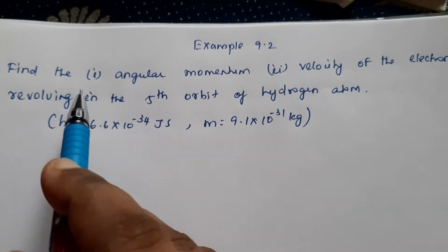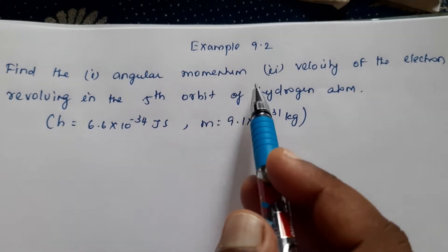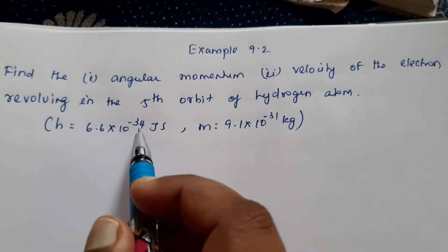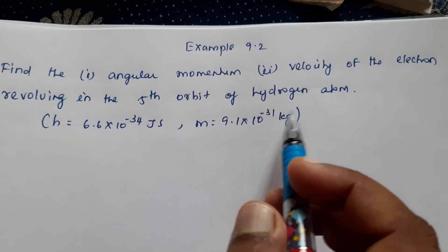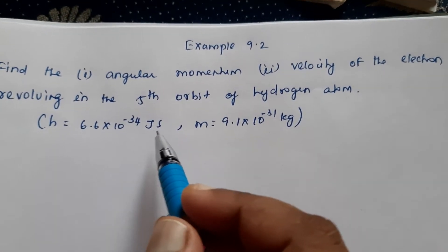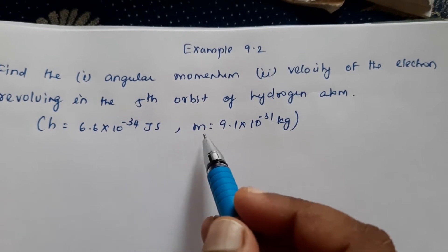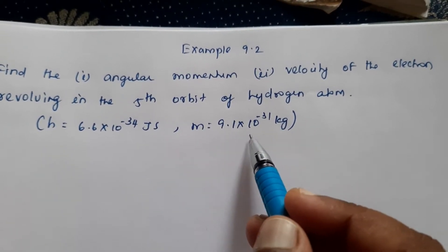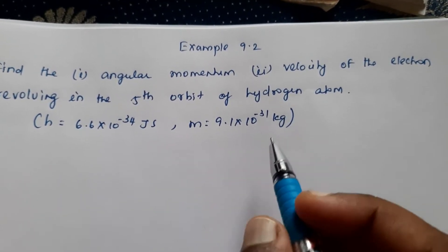Example 9.2: Find the angular momentum and velocity of the electron revolving in the 5th orbit of hydrogen atom. Given H value was 6.6 into 10 raised to minus 34 joule per second and M value was 9.1 into 10 raised to minus 31 kg.